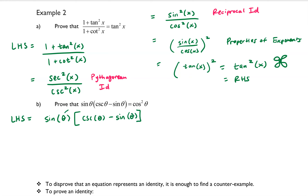I'm going to go ahead and distribute sine into both of those terms. Sine of theta times cosecant of theta ends up being 1, because that's sine of theta times 1 over sine of theta. And then the second term, sine of theta times sine of theta, gives us sine squared theta.